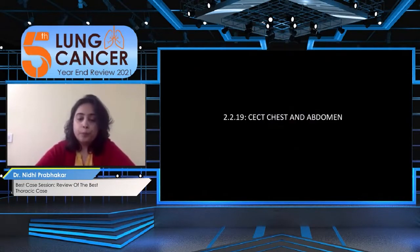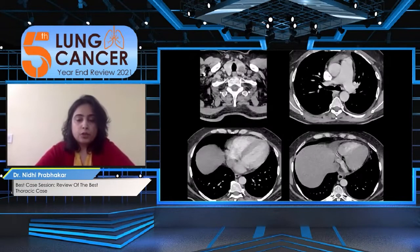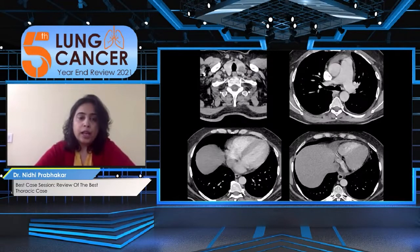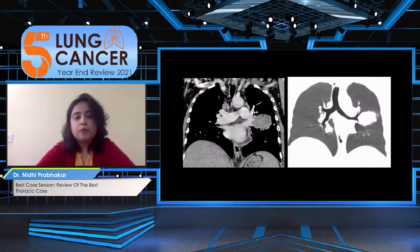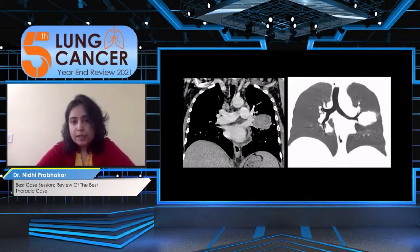CT chest was performed. The mediastinal window showed no mediastinal lymphadenopathy, minimal pericardial effusion, minimal pleural effusion, and a hypodense nodule in the left lobe of the thyroid. The CT chest images showed a well-defined lobulated homogeneous mass with no necrosis, no fat, and no calcification.